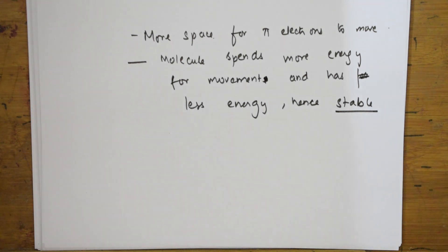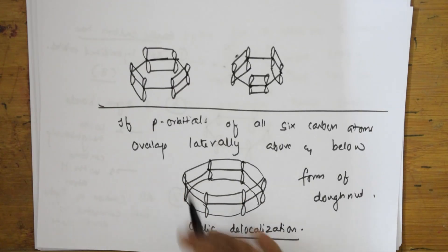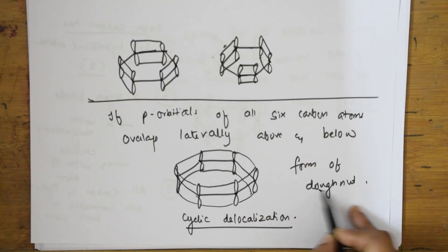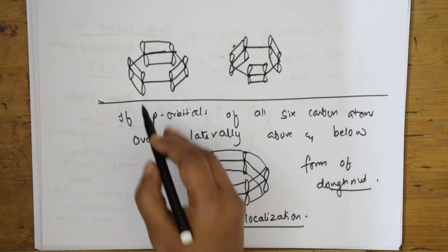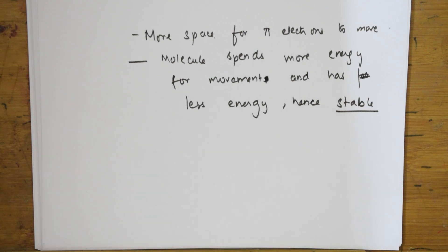So whenever you write the orbital diagram, remember: explain sp2 hybridization and three sigma bonds, show how all atoms are connected in the same plane, then explain cyclic delocalization as a donut-shaped electron cloud, show the Kekulé pi bond positions, and conclude that benzene is stable. Thank you for watching — I will meet you again with the next topic: Hückel's rule.